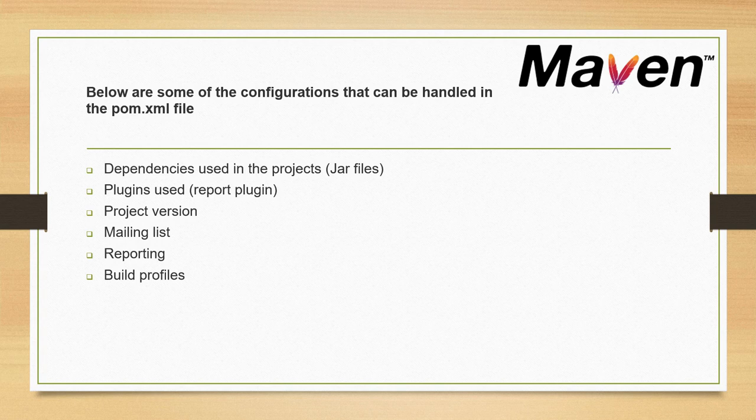Next, plugins. We have various kinds of plugins in Maven — like to generate a JUnit test report you have a plugin, to configure Tomcat you have a separate plugin, to generate a jar file or war file we have a separate plugin. So there are various plugins that exist in Maven to perform different actions.